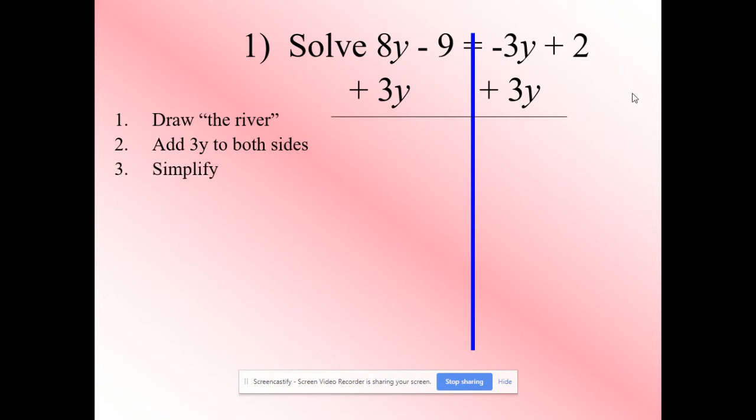So if we add 3y and simplify, we get 11y, bring down our negative 9, we've got 2 because we've cancelled them out on the other side.